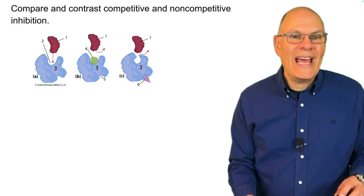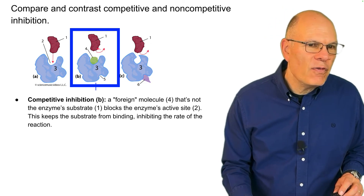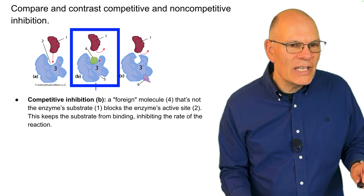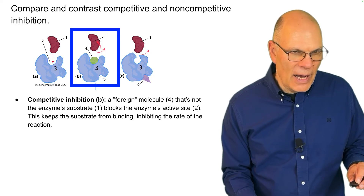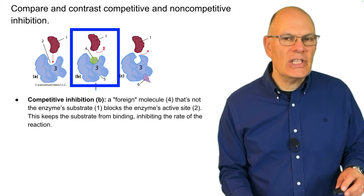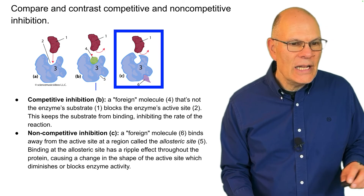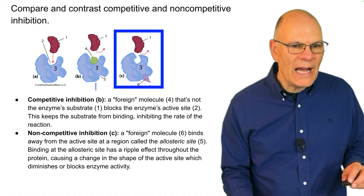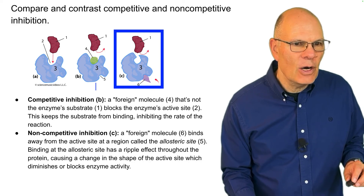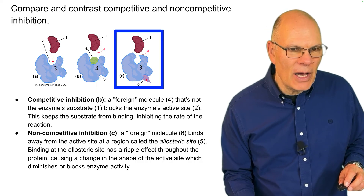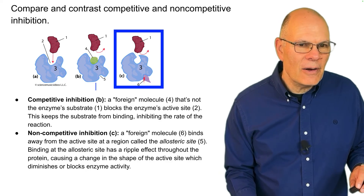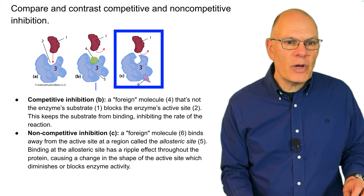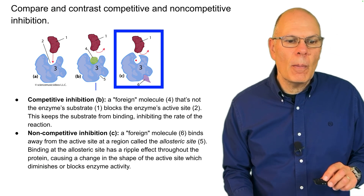Compare and contrast competitive and non-competitive inhibition. In competitive inhibition, a foreign molecule — not the enzyme's substrate — blocks the enzyme's active site, keeping the substrate from binding and inhibiting the rate of the reaction by competing for the active site. In non-competitive inhibition, a foreign molecule binds away from the active site at a region called the allosteric site. Binding at the allosteric site causes a ripple effect throughout the protein that changes the shape of the active site, so the substrate can no longer bind there, diminishing or blocking enzyme activity.